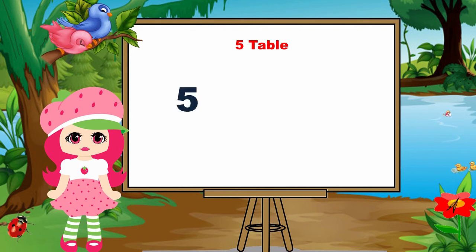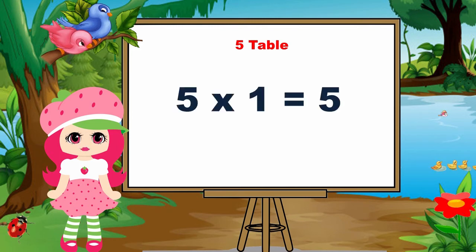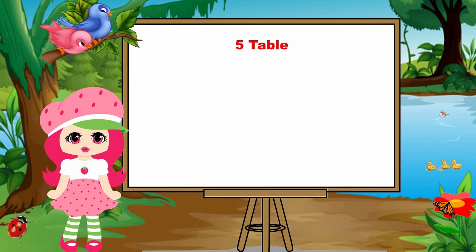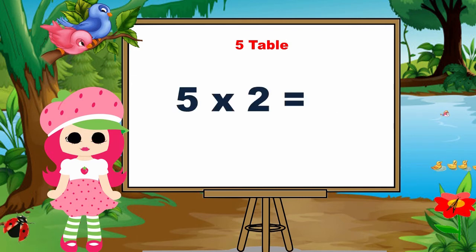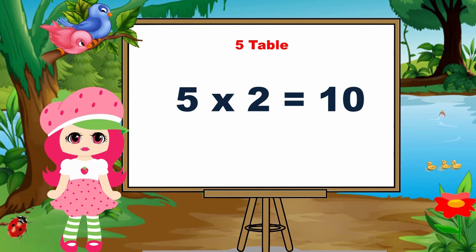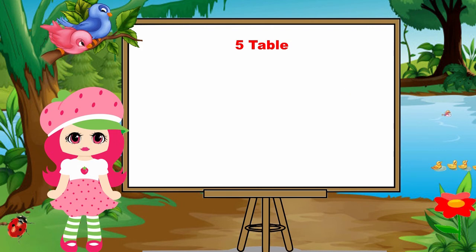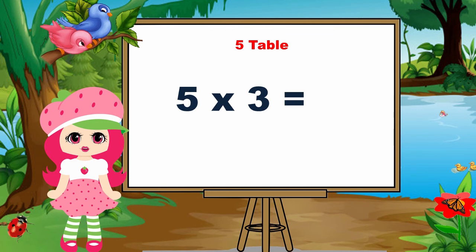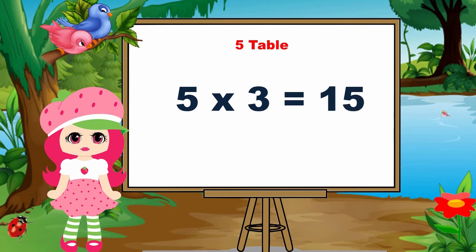Five ones are five. Five twos are ten. Five threes are fifteen.